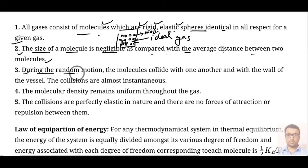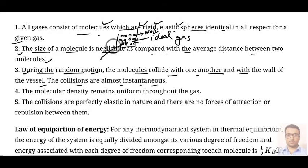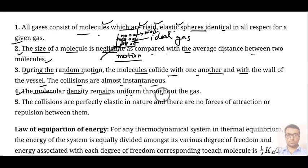The third assumption is that during random motion, molecules collide with one another and with the walls of the vessel, and these collisions are almost instantaneous. These molecules inside the vessel are always found in thermal motion, they keep colliding with each other and with the walls. The fourth point is that molecular density remains uniform throughout the gas — at every point the number of molecules in any portion of the vessel is constant.